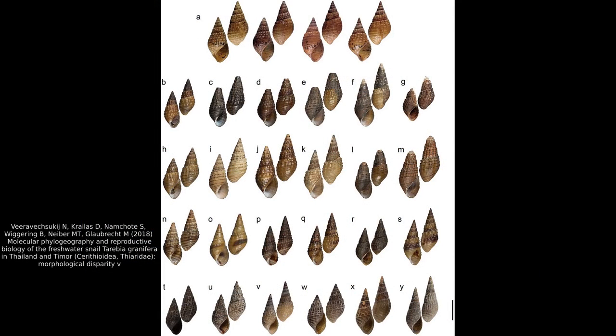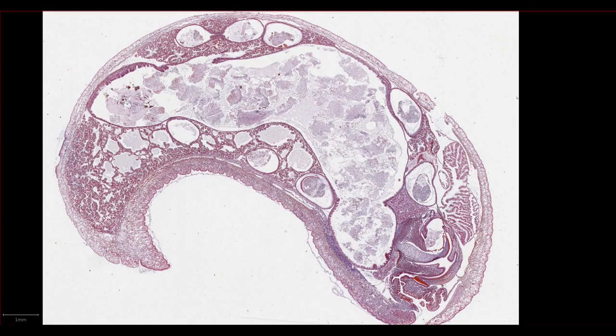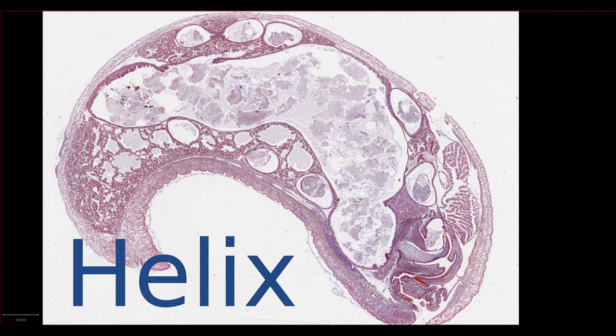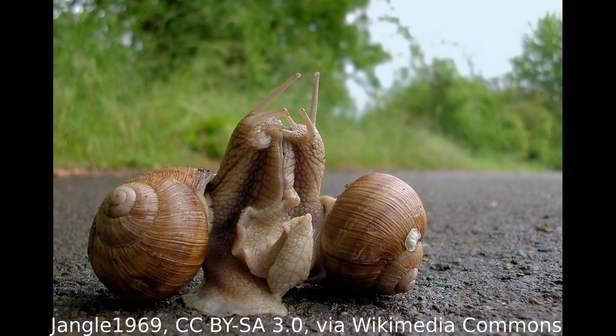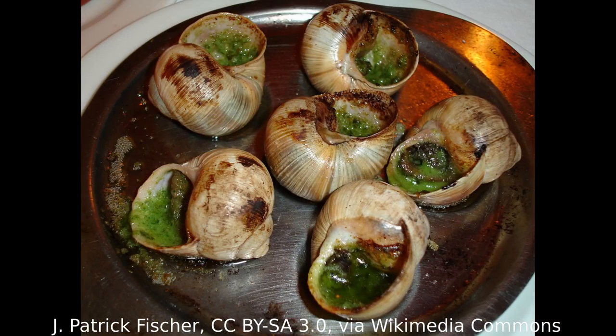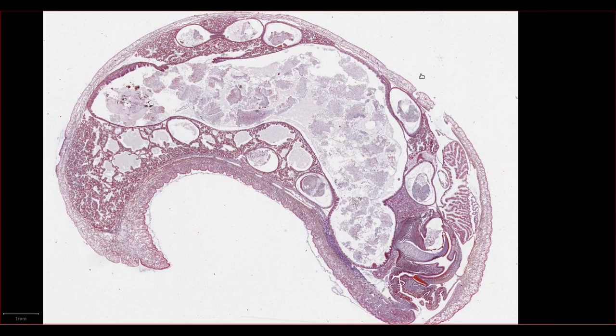Snails come in all shapes and sizes, but retain a similar body plan between them. The specimen that we're looking at today is from the genus Helix, which is a genus of European and Mediterranean land snails, containing around 30 species. A famous member of the genus is Helix pomatia, the principal ingredient for the dish escargot. If we look at the slide, we can begin to orientate ourselves. In this specimen, the characteristic shell has been removed for ease of processing.